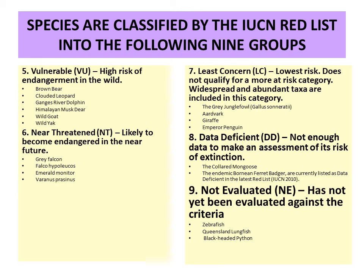So, according to the IUCN red list, we have nine categories: 1) Extinct, 2) Extinct in Wild, 3) Critically Endangered, 4) Endangered, 5) Vulnerable, 6) Near Threatened, 7) Least Concern, 8) Data Deficient, and 9) Not Evaluated.